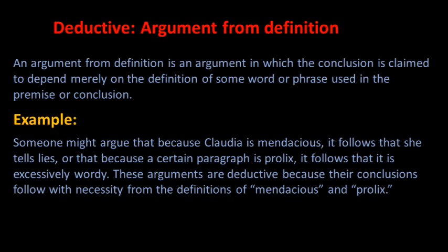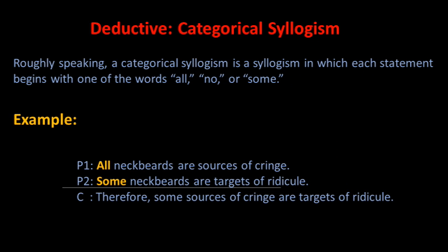These arguments are deductive because their conclusions follow with necessity from the definitions of 'mendacious' and 'prolix.' A syllogism, in general, is an argument consisting of exactly two premises and one conclusion. A categorical syllogism is a syllogism in which each statement begins with one of the words 'all,' 'no,' or 'some.' For example: all neckbeards are sources of cringe; some neckbeards are targets of ridicule; therefore, some sources of cringe are targets of ridicule. Arguments such as these are nearly always best treated as deductive.